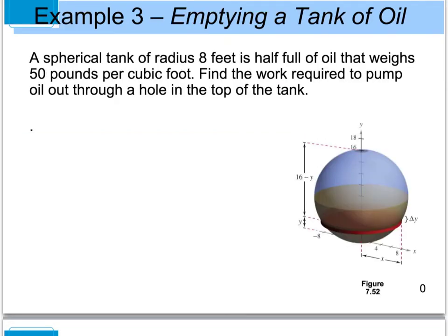Example three: a spherical tank of radius 8 feet is half full of oil that weighs 50 pounds per cubic foot. We want to find the work required to pump the oil out through a hole in the top of the tank — essentially pushing all the oil up and out through a tiny hole at the top.